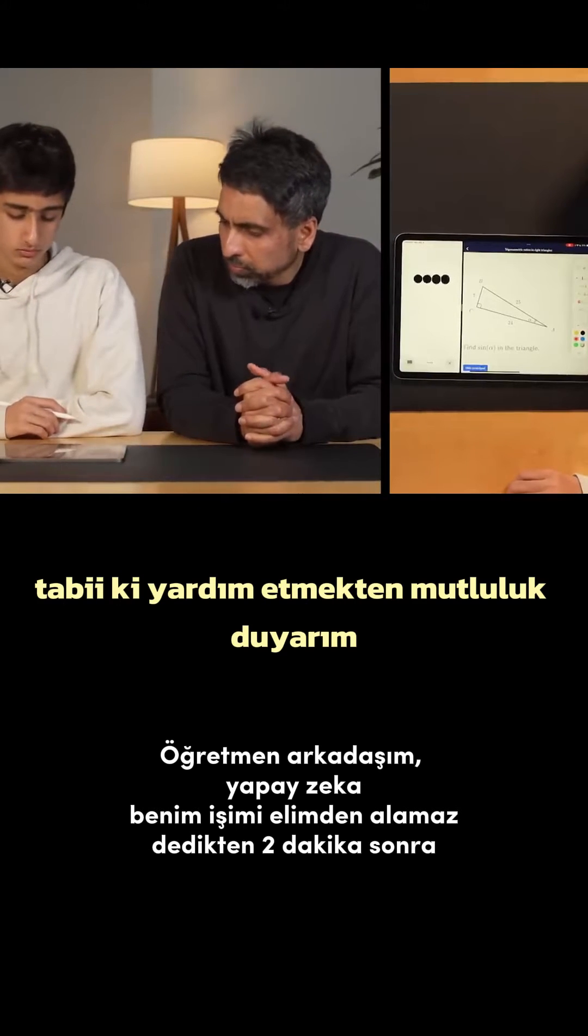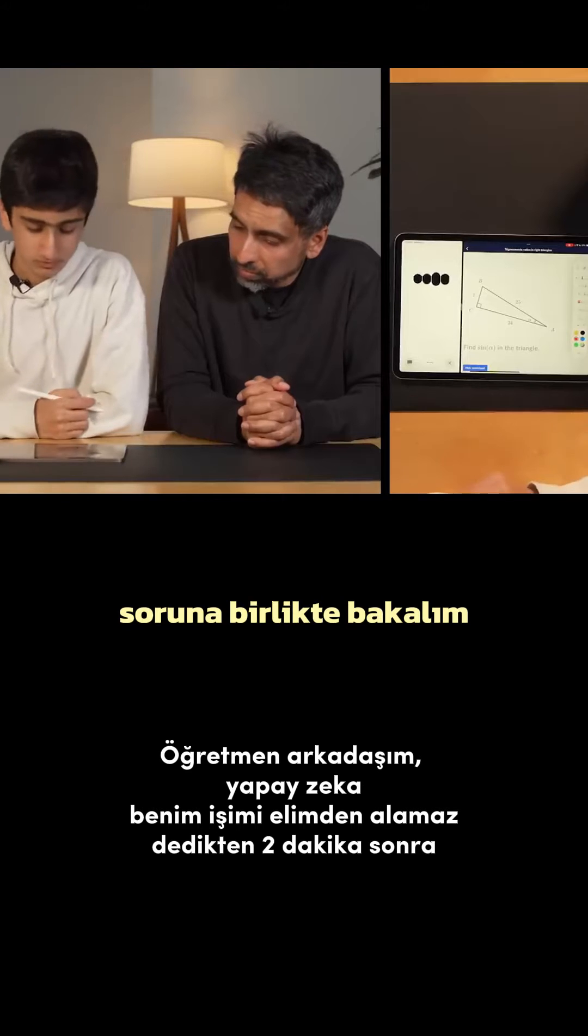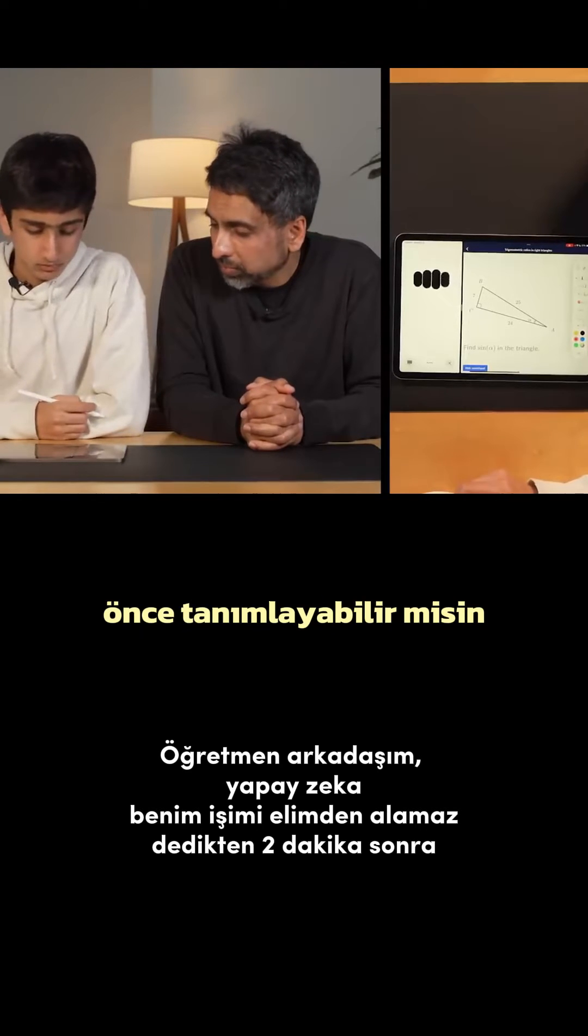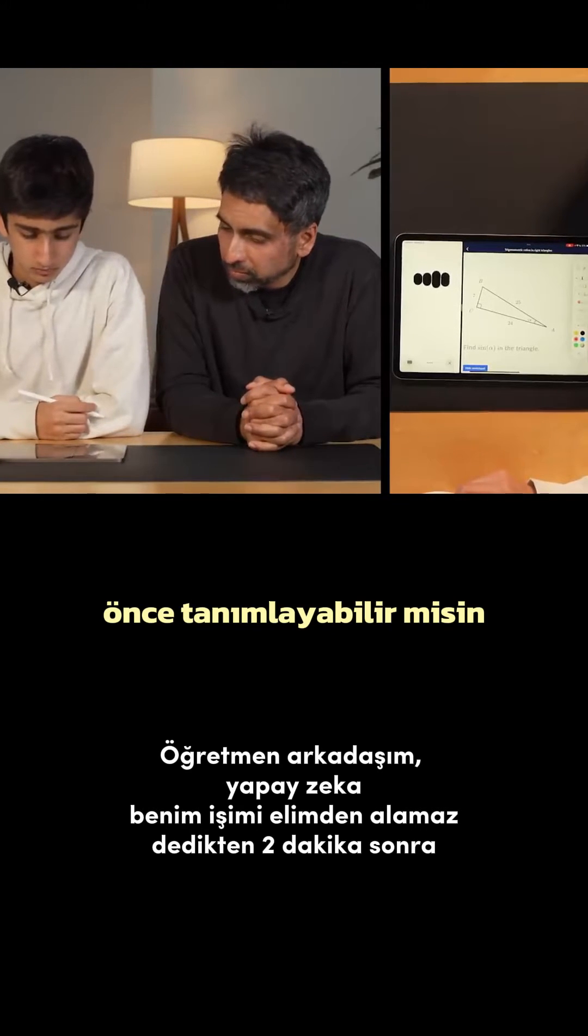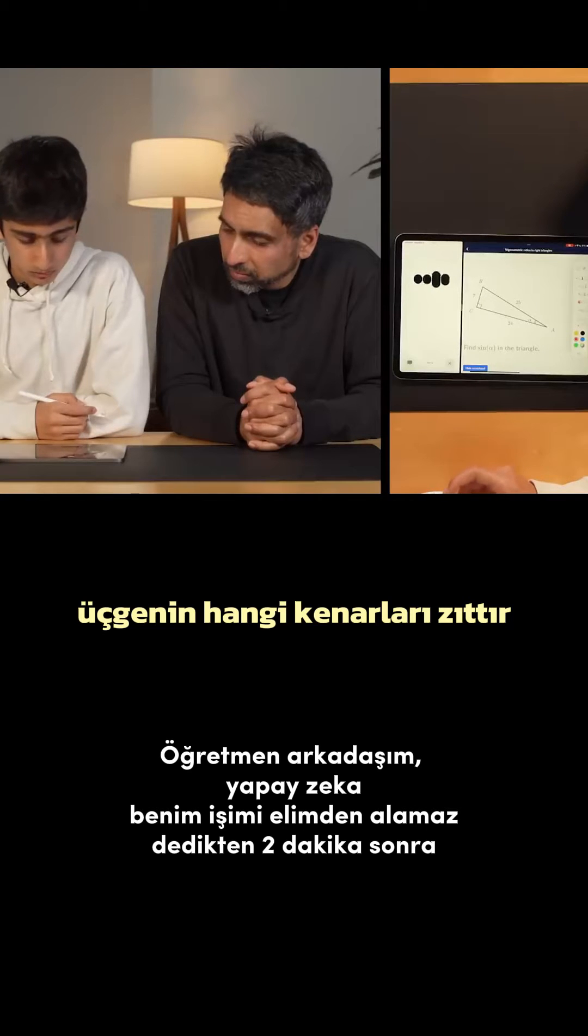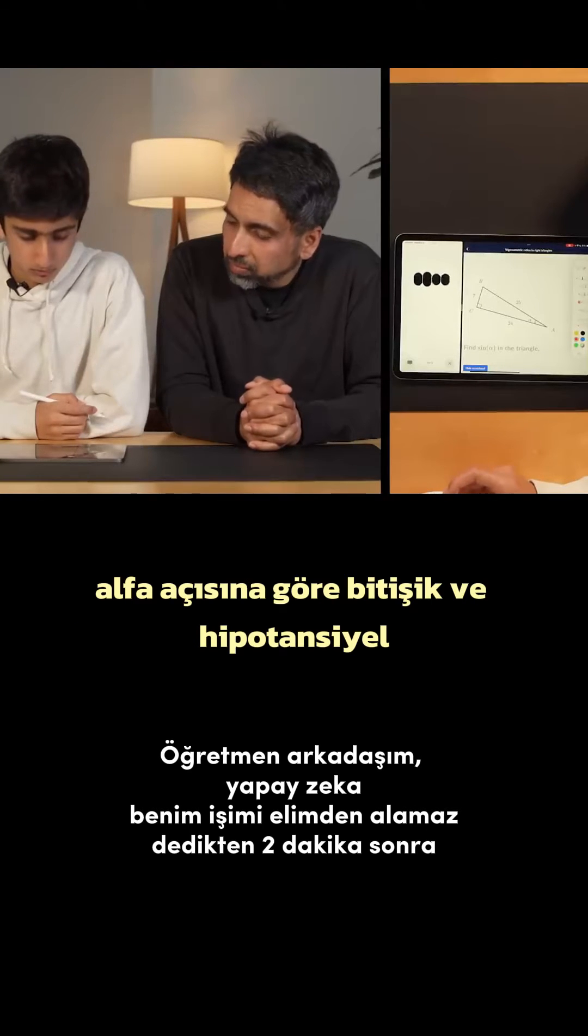Of course, I'd be happy to help. Let's look at the problem together. Can you first identify which sides of the triangle are the opposite, adjacent, and hypotenuse relative to angle alpha?